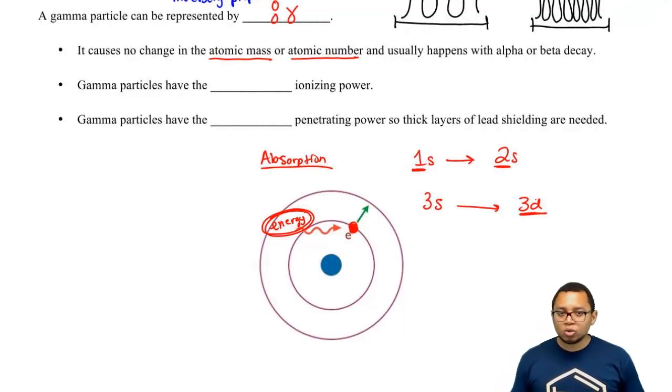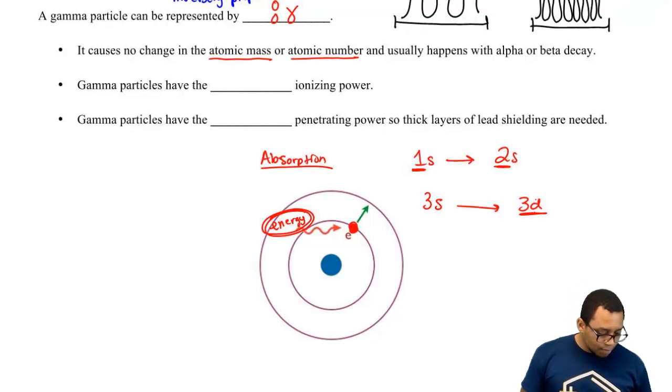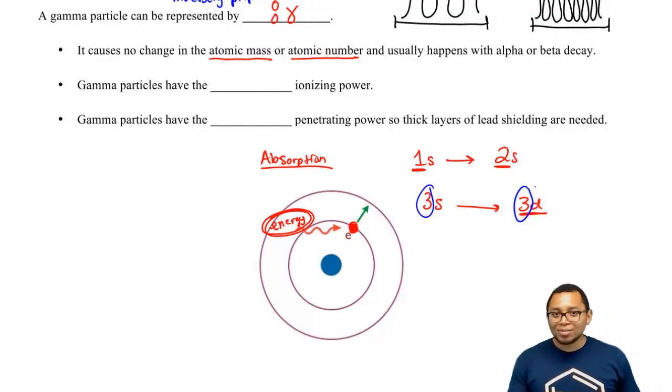The first one represents absorption when you jump from one shell to a higher shell. The 3s to 3d represents absorbing energy and jumping from a lower orbital to a higher orbital within the same shell. Both begin with number 3, so they're both within the third shell. But d orbitals have more energy than s orbitals.